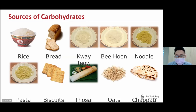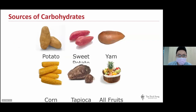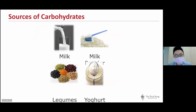Carbohydrates include rice, bread, noodles, pasta, biscuits, chapati, and oats. Some vegetables also contain carbohydrates — these are starchy vegetables like potato, sweet potato, yam, corn, and tapioca. All fruits contain carbohydrates. Dairy products such as milk, yogurt, and powder also contain carbohydrates, as do legumes such as baked beans, kidney beans, lentils, and dhal.